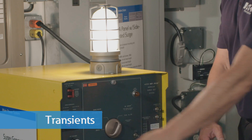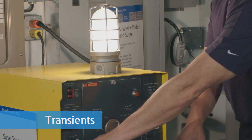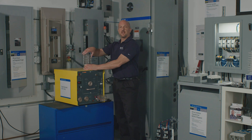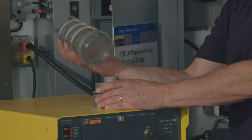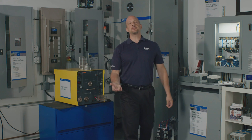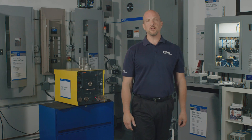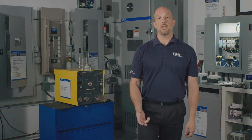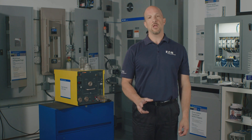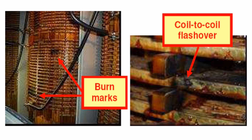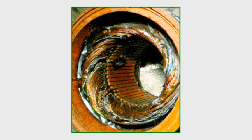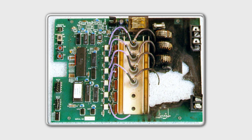Transients or surges are short-duration, high-voltage, sub-cycle events, and their effects can be significant and damaging. Instead of insulation looking like it was baked from harmonics, it will typically have a simple pinhole in the insulation, usually near the end turn. Transients usually result in damage that's hard to recover from — often the equipment must be replaced.